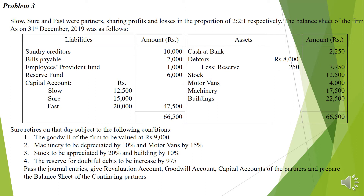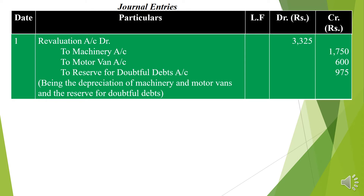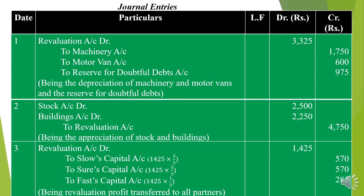We are required to prepare the revaluation account, goodwill account, capital accounts of the partners, and the balance sheet. This type of problem can be expected for Section C, with parts possibly asked for Section B as well. Now the first journal entry: for revaluation, assets that decreased in value — motor van, machinery, and the reserve for doubtful debts of 975 — are debited to revaluation account.